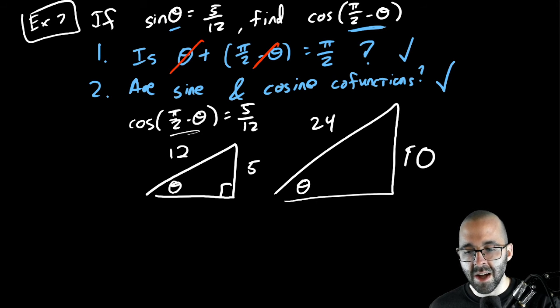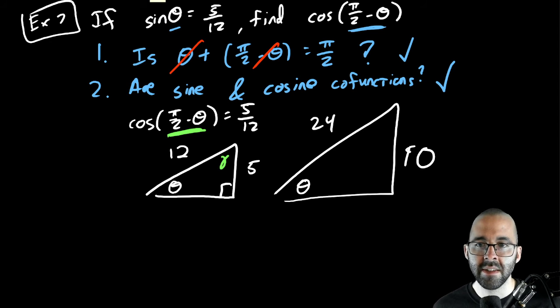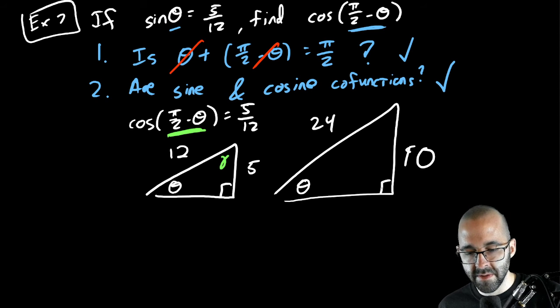So if we look at the complementary angle, the cosine of the complementary angle, we can call it gamma, cosine is going to be the adjacent over the hypotenuse, also five twelfths. Triangles, all right, the triangles are great visualization tools, and you can use them here. Last example of this video.